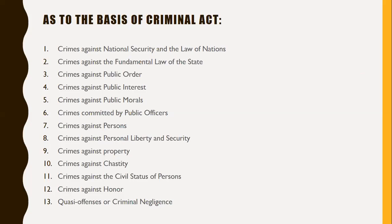Crimes against property include robbery with violence or intimidation, robbery by use of force, brigandage, theft, occupation of real property, and usurpation of real rights in property. Crimes against chastity include adultery, concubinage, lasciviousness, seduction, corruption of minors, white slave trade, and abduction. Note that rape is now classified as a crime against persons. Crimes against the civil status of persons include bigamy and other illegal marriages. Crimes against honor include libel (malicious accusation in writing), slander, or oral defamation.